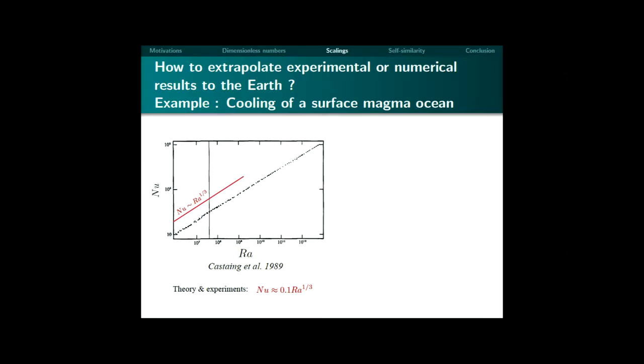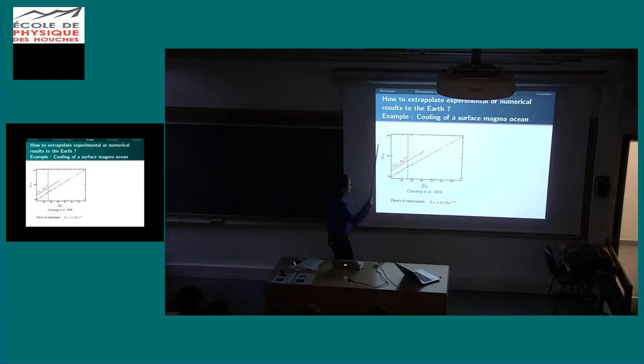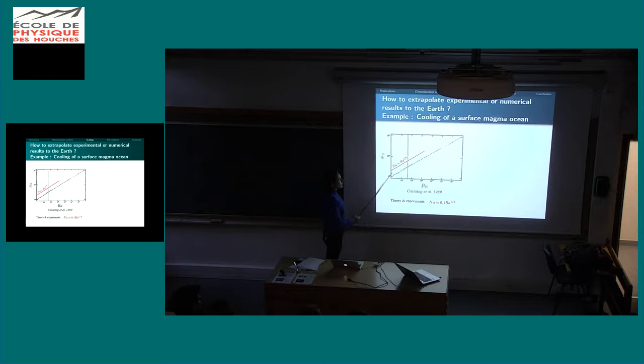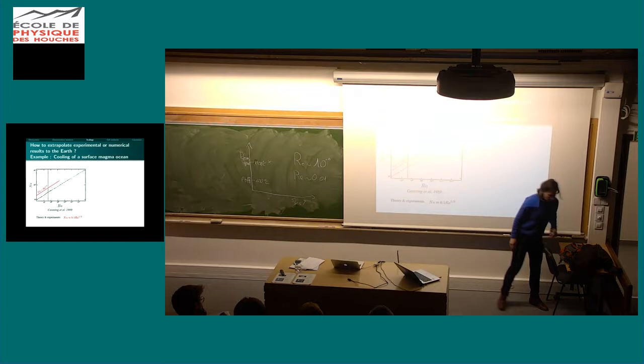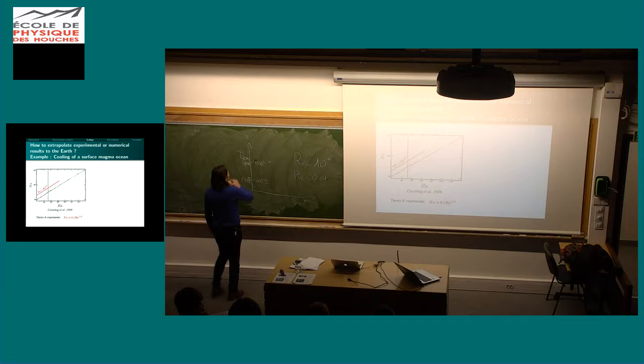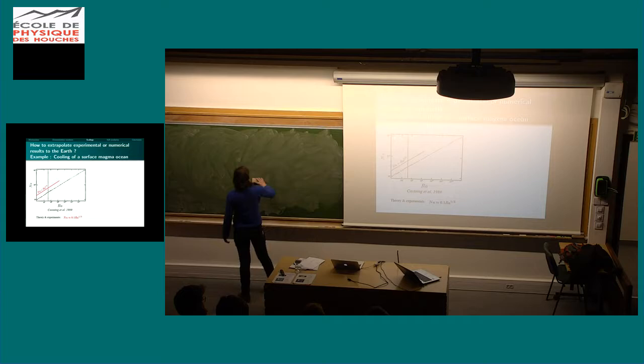So what can we do about that? You can do experiments. These are quite classical Rayleigh-Bénard convection experiments that have been done in the 80s, and basically they found scaling laws with Nusselt number proportional to Rayleigh to the one-third. That's nice because you have a scaling law now, and it seems to work quite well with the experiments. But can we understand theoretically what that scaling law means? I think it's interesting to see that because the reasoning can be applied to different systems.